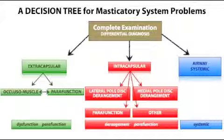Lateral pull, medial pull, parafunction, disease, pathosis in the joint — how do you diagnose that clearly? How do you work with imaging, how do you order imaging, how do you interpret imaging, how do you make those decisions, how do you manage these things, how do you work with referral sources, and then the whole airway and systemic connection and how we work with that.